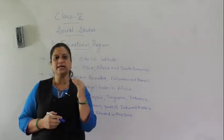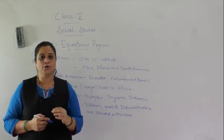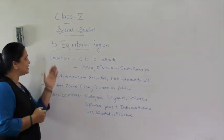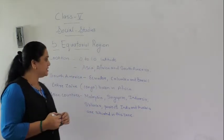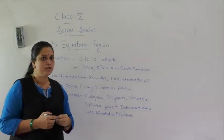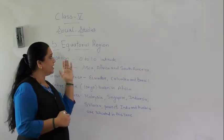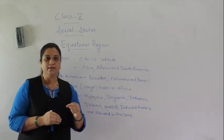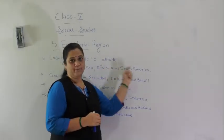As this region receives the direct rays of the sun, it is extremely hot and humid throughout the day. The equatorial region falls in the torrid zone. If we look at the map carefully, we will find that the equatorial region is spread across three continents: Asia, Africa, and South America.